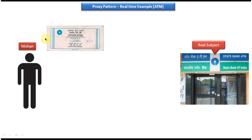Mohan wants to withdraw some amount from State Bank of India. He has to carry his passbook, go to the bank, fill out a form with his name and the amount he wants to withdraw, then stand in a queue and meet the bank employee. The bank employee will verify whether Mohan has enough money, and if so, will give that amount to Mohan.